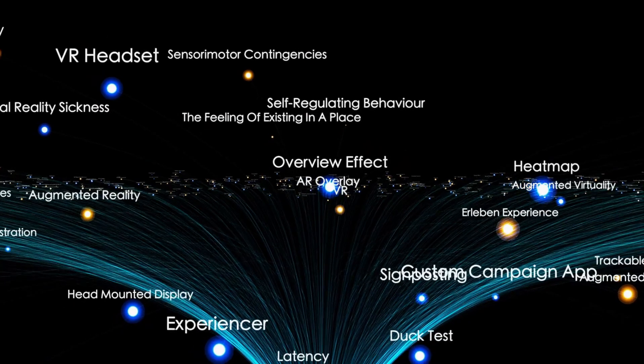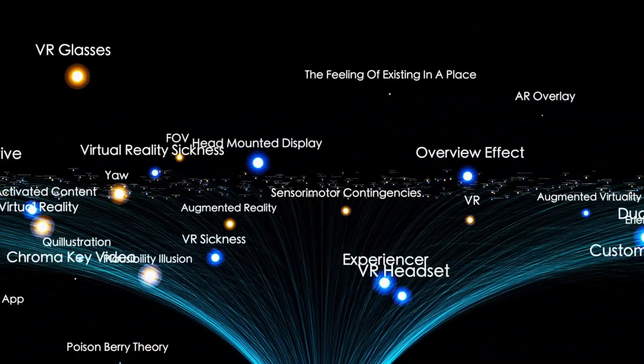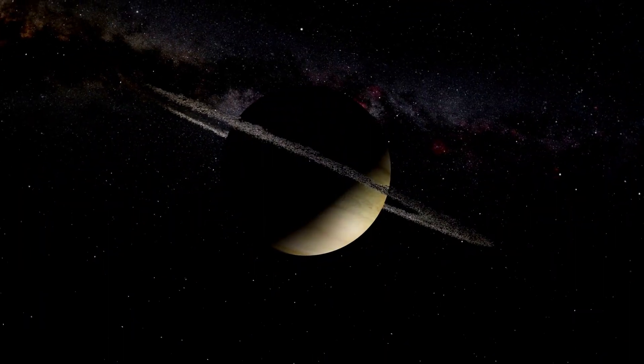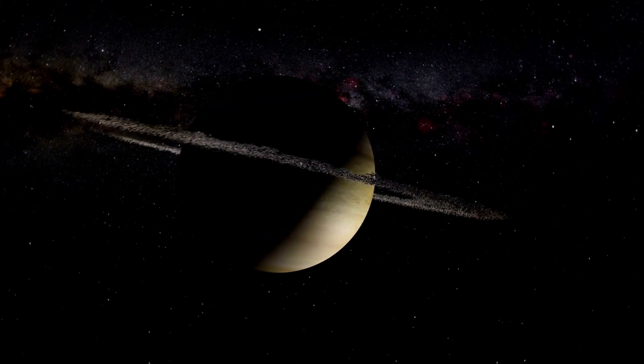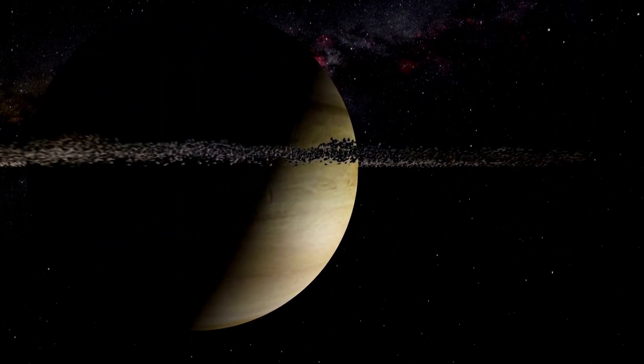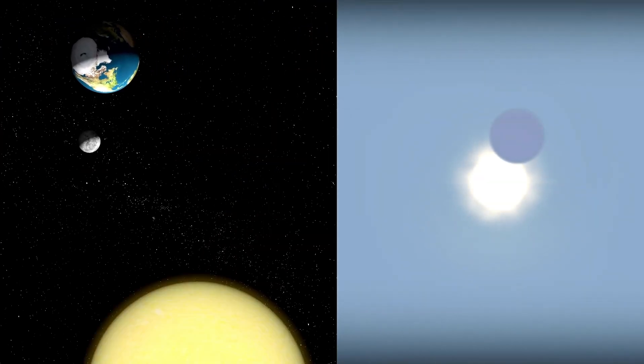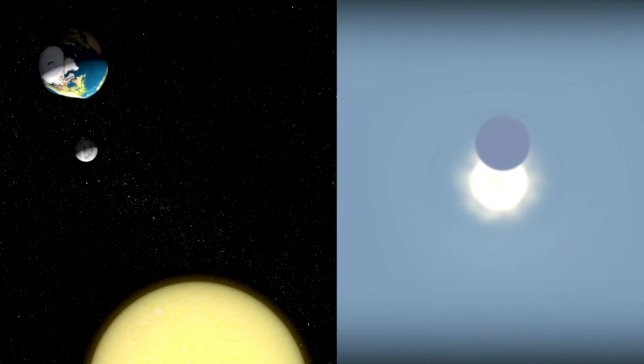Betelgeuse, located more than 640 light-years away from Earth, is a star of staggering proportions that dwarfs our sun in size. Its colossal nature and striking red hue make it a remarkable celestial object, captivating observers for generations. Even at the speed of light, it would take over 640 years to reach Betelgeuse, a journey far beyond the capabilities of current technology.